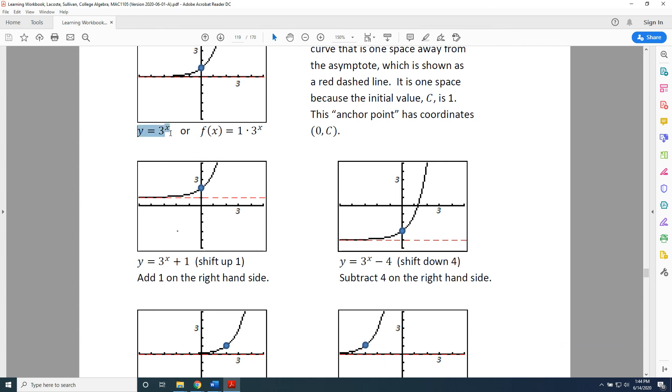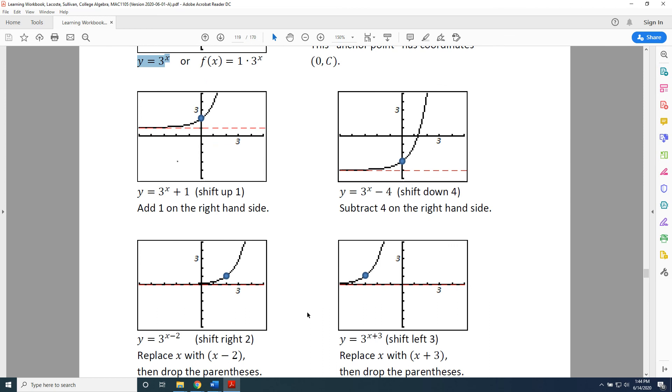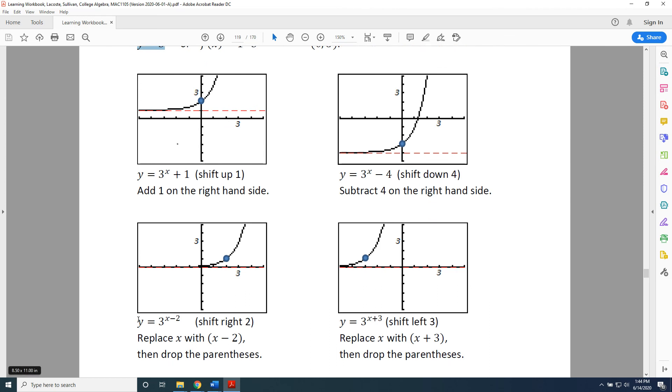So, we take this equation, y = 3^x, and we replace that x with an x + 3, because remember, horizontal shifting is the reverse of what you would expect - to the left would be adding. And we get our two new equations, shown here. 3^(x - 2) for the graph on the left, 3^(x + 3) for the graph on the right.